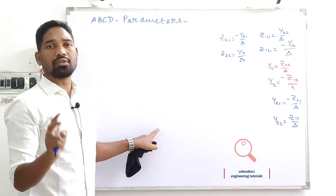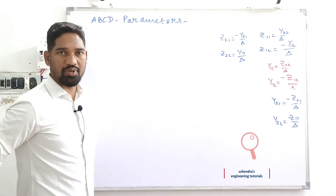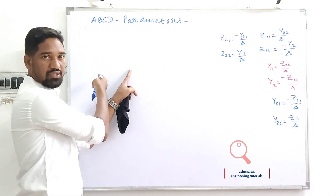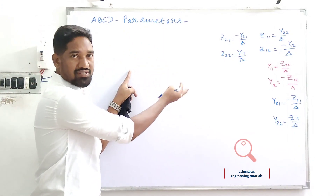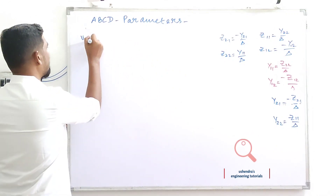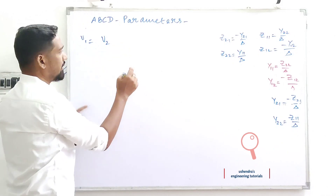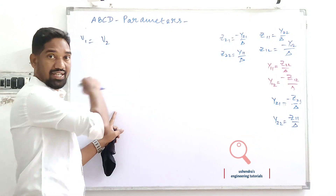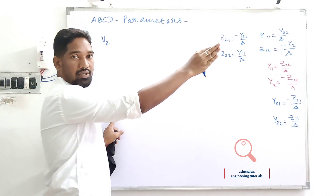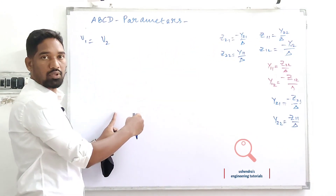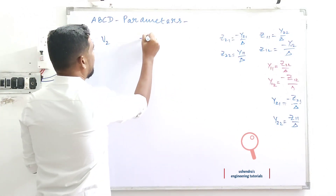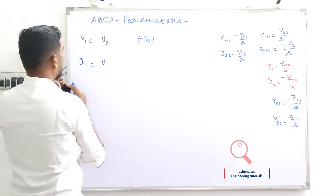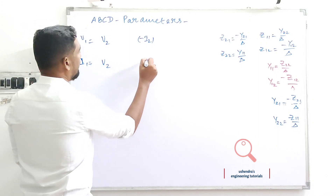So the two important equations governing the ABCD parameters: input parameters V1 and I1 are expressed in terms of output parameters. V1 is expressed in terms of V2 — not the usual direction in the two-port network, but the reverse direction. For I2, the current is moving from inside to outside, so we consider negative I2 rather than I2 directed toward the two-port.